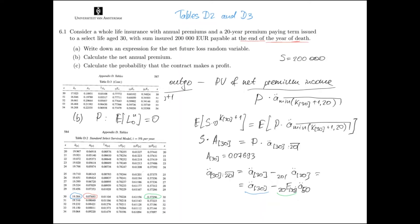In table D3 we can find the expected present value of a whole life insurance for a 50-year-old person. Plugging in all these numbers, we obtain that the term annuity-due is equal to 13.04178, and using the equivalence principle we find that the annual premium is approximately 1,179.73 euros.